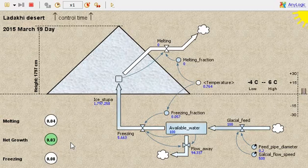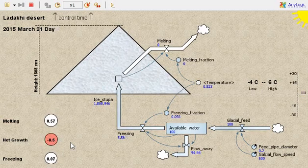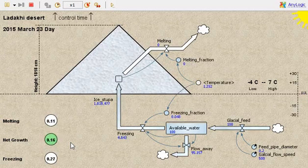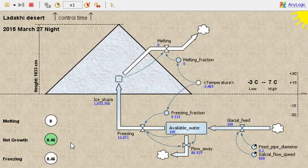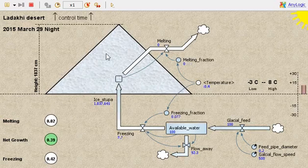But as we will enter into April, melting gets more pronounced and the artificial glacier starts shrinking. Since melting depends on the surface area of the ice cone,